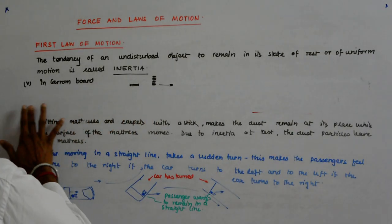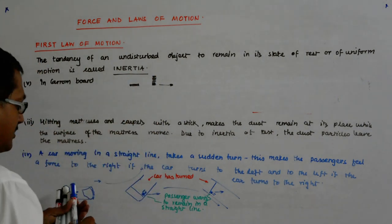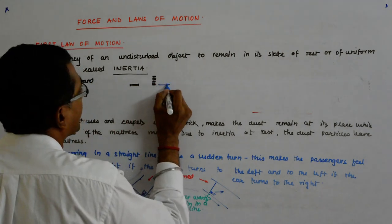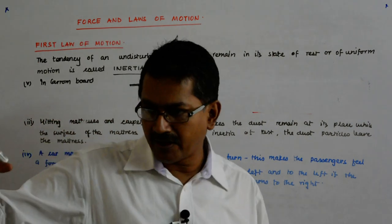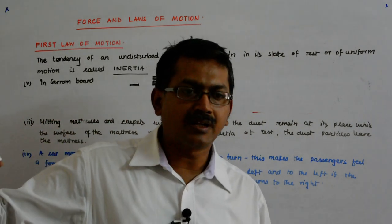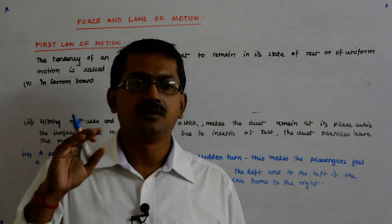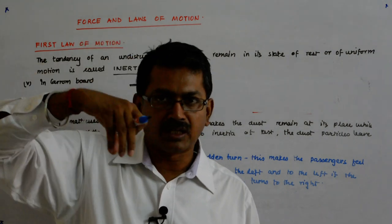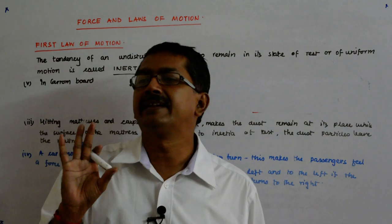So, in this carrom board, when the striker hits it - this is the striker, these are the coins - what happens? The coin at the bottom suddenly gets away with the striker, and the whole pillar with one coin over the other actually just drops down without getting disturbed.